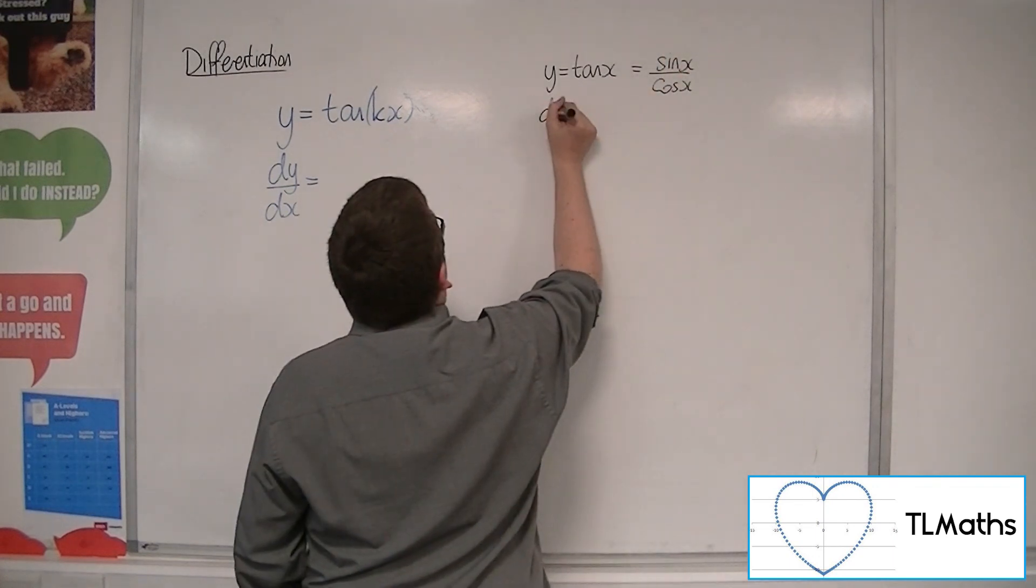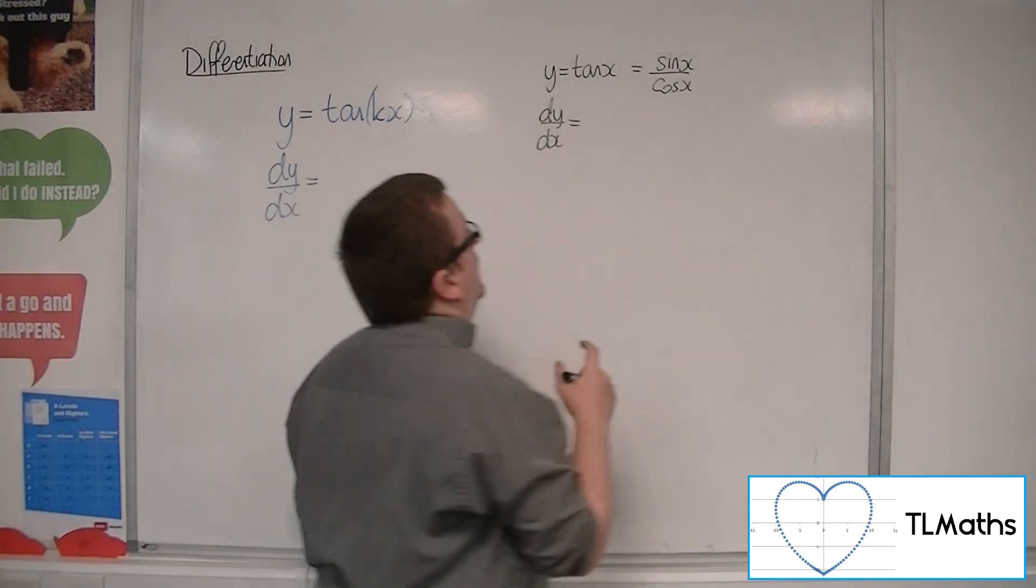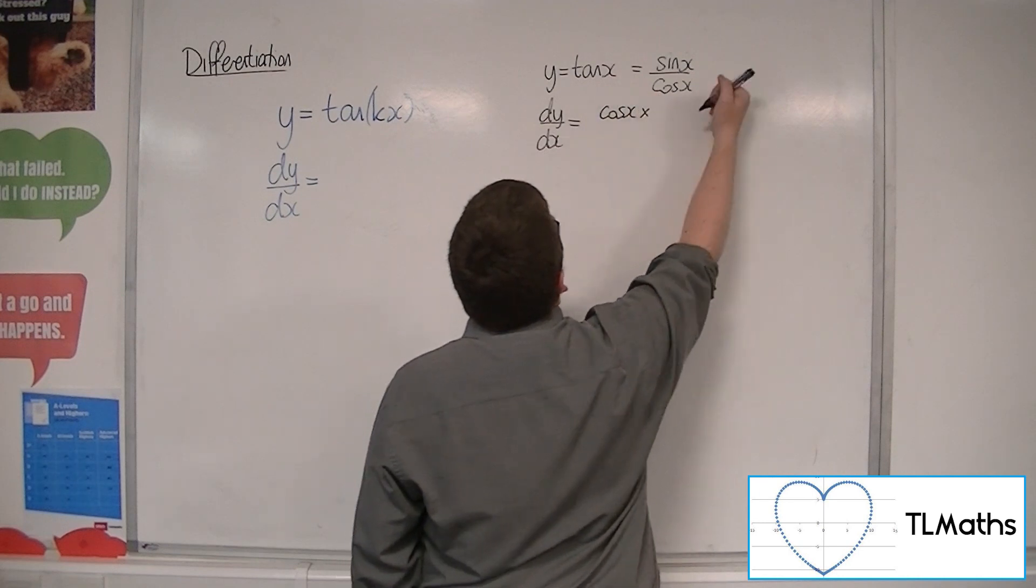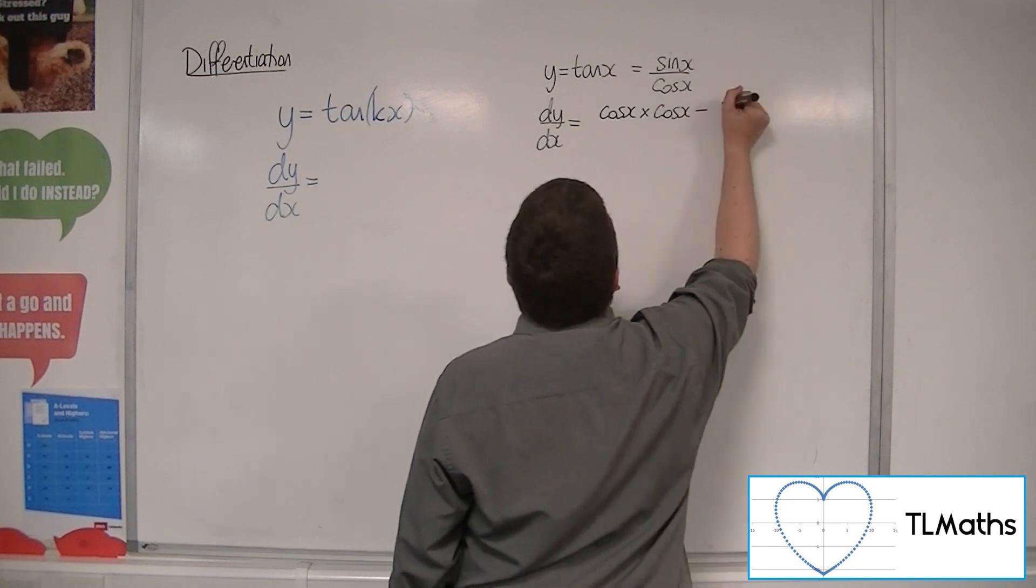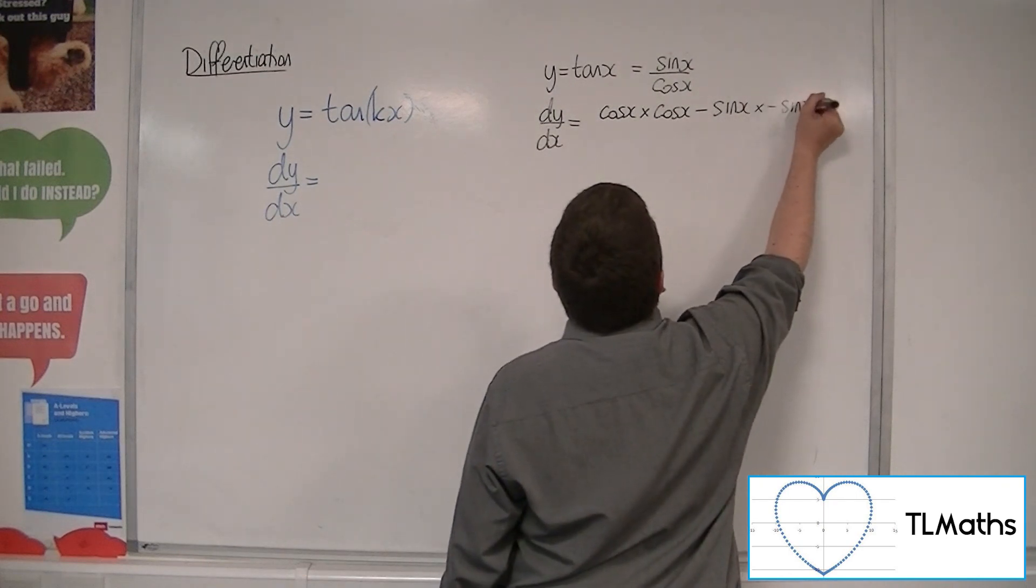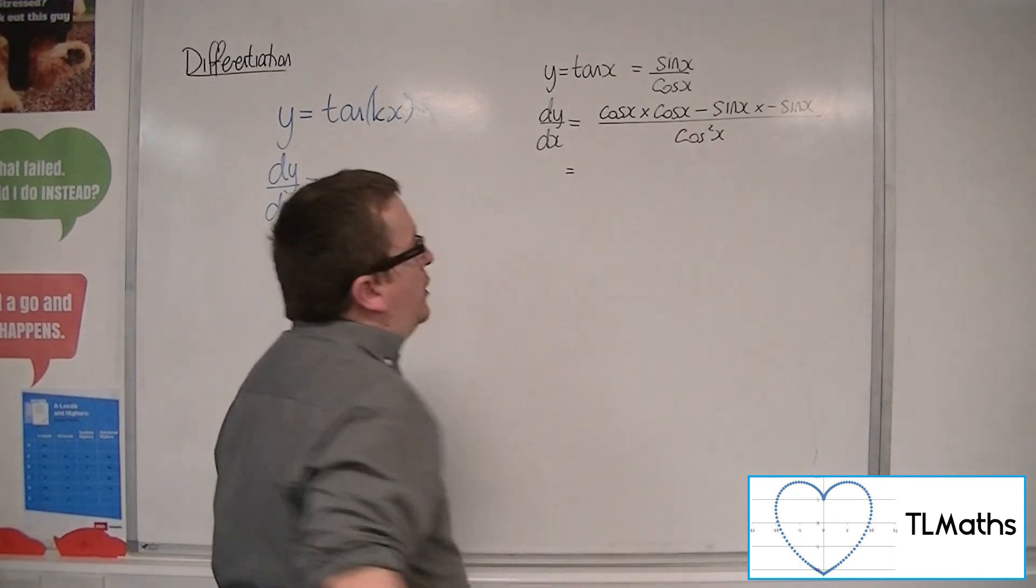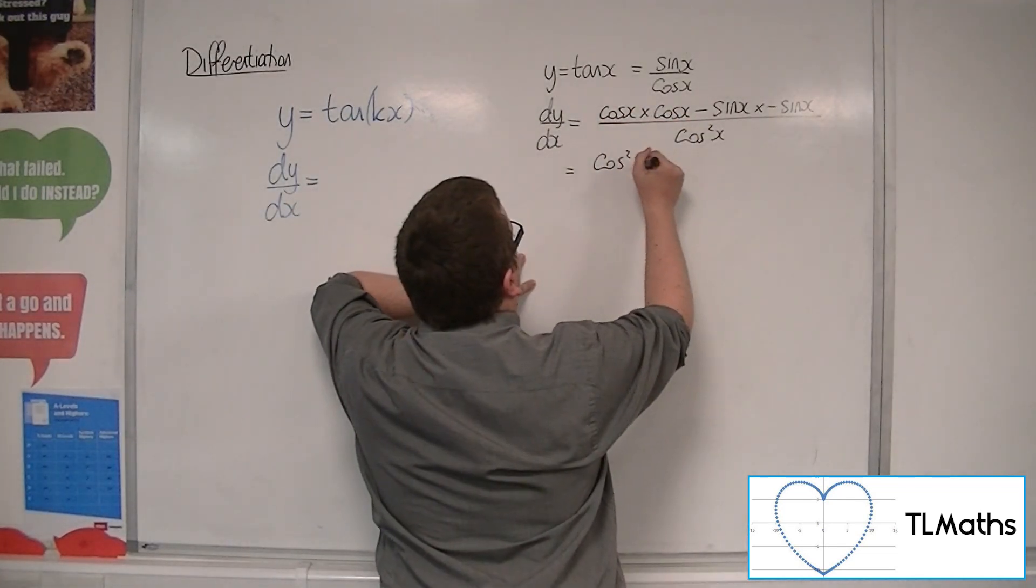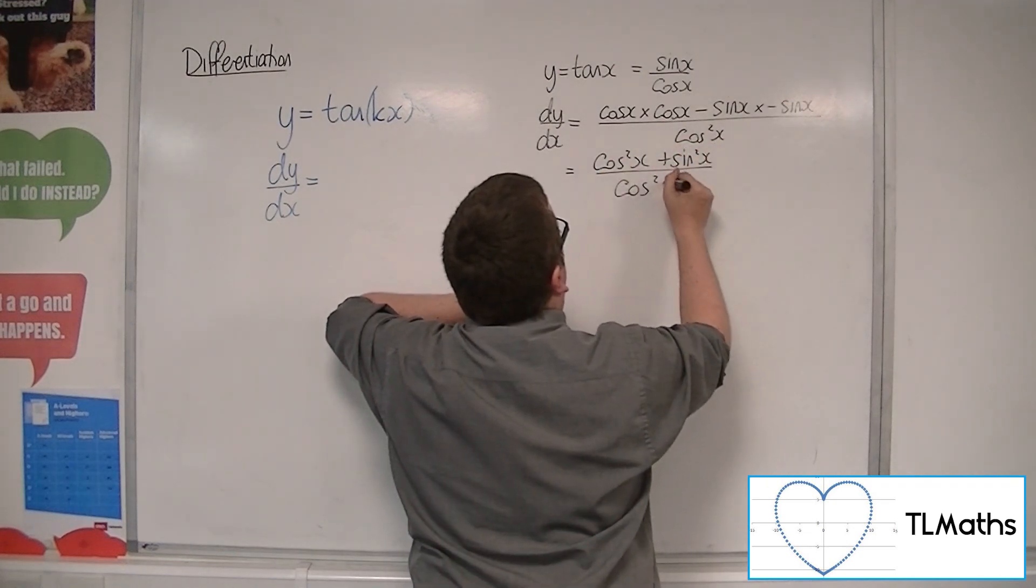So to differentiate tan, we could just use the quotient rule. So the quotient rule would say cosine times by the derivative of the top, which is cosine, take away the top times the derivative of the bottom, which is minus sin, all over the bottom squared. This is the quotient rule in action. So we get cosine squared plus sine squared over cosine squared x.